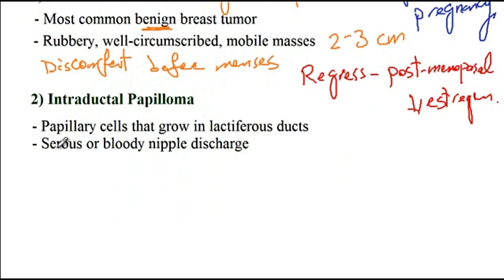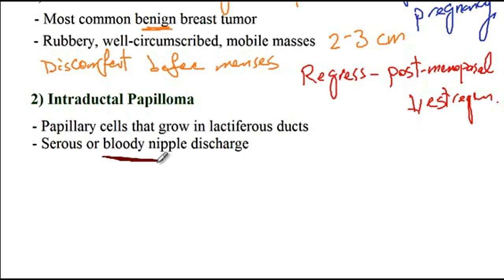Next is the intraductal papilloma. It is very important to know that intraductal papilloma is the most common cause of bloody nipple discharge. So if on examination a patient has bloody nipple discharge, the first thing you should think of is intraductal papilloma.